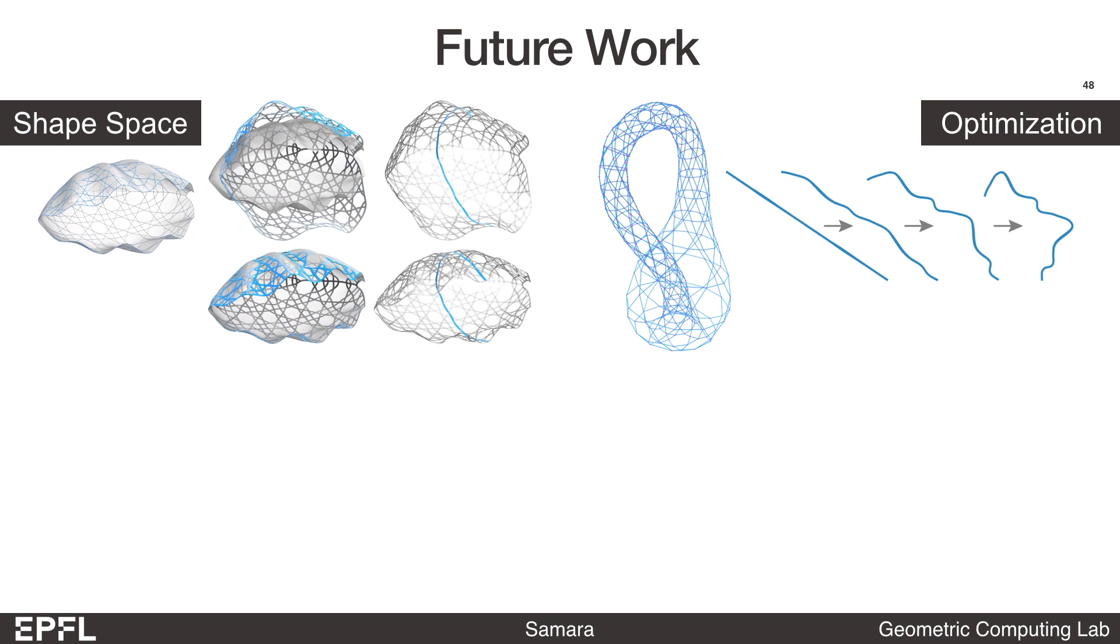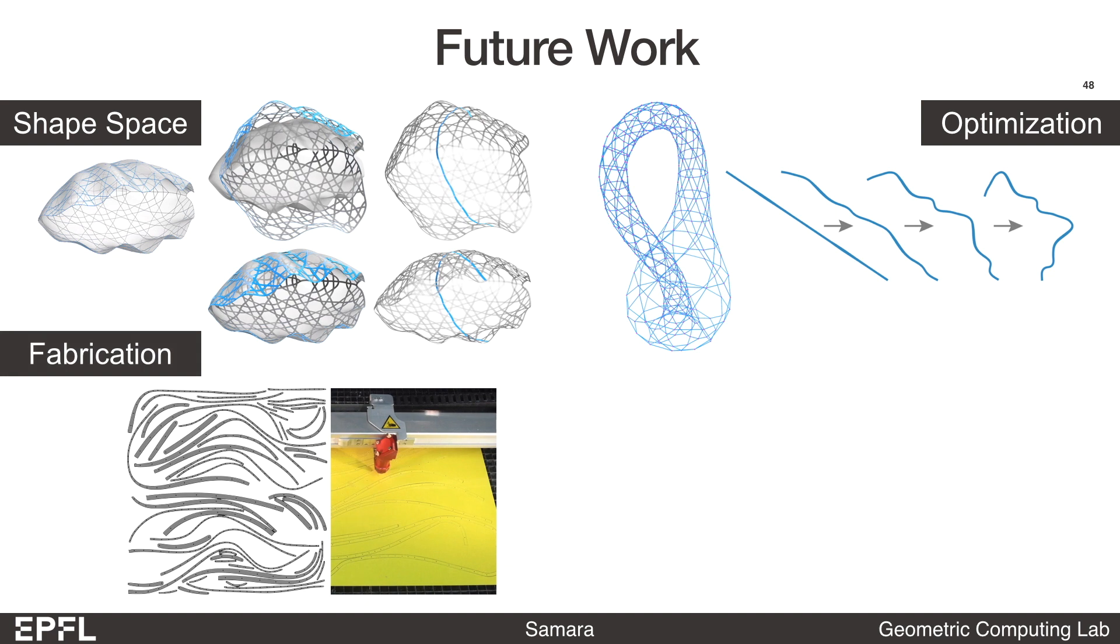Another very exciting future direction is to explore the interplay between topological singularities and ribbon curvature, and jointly optimize the topology and the ribbon shape.